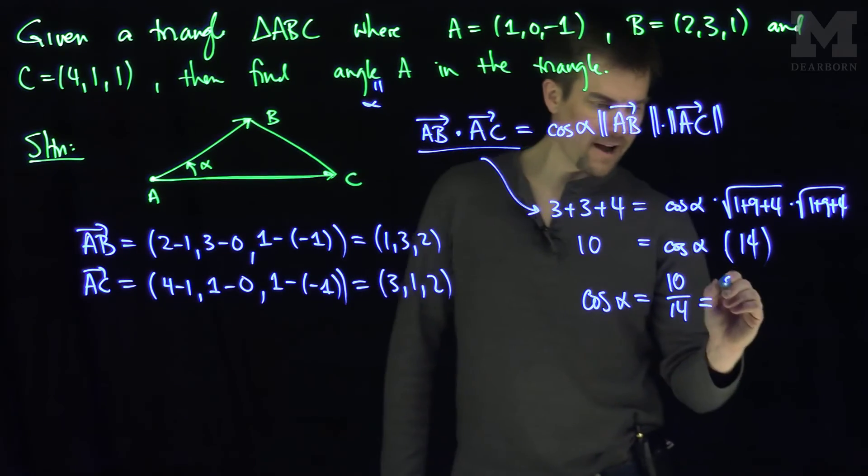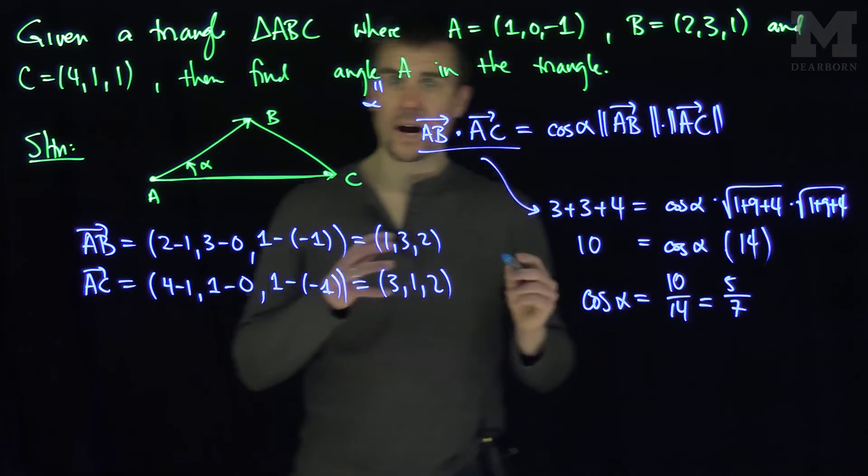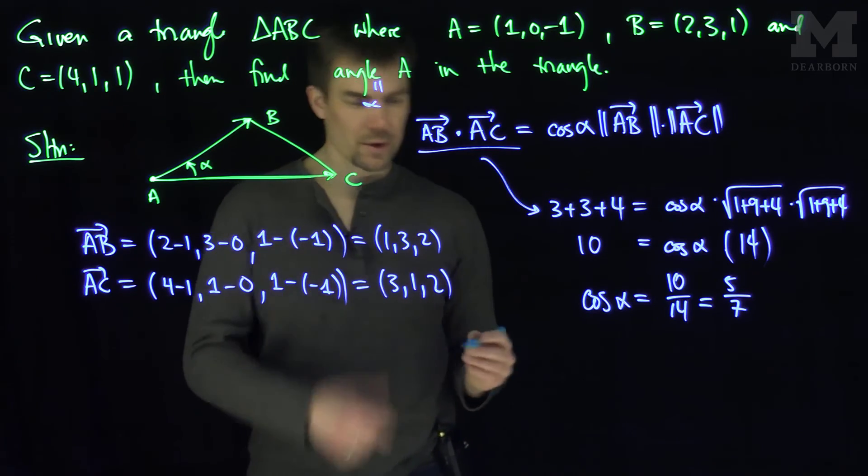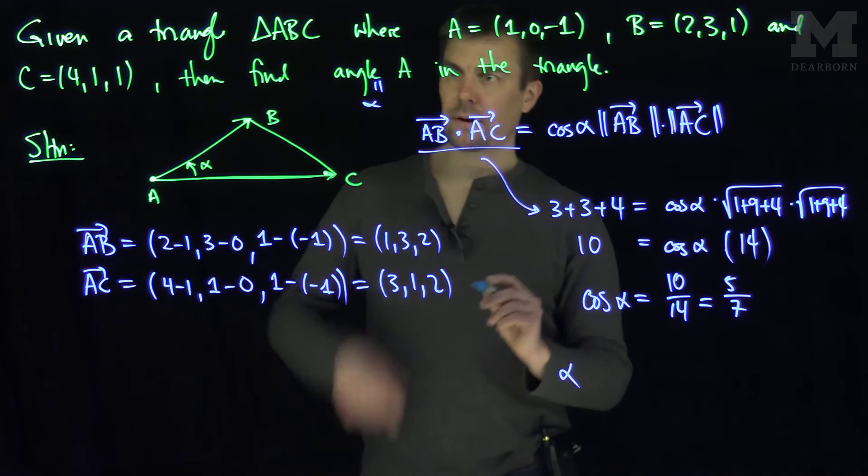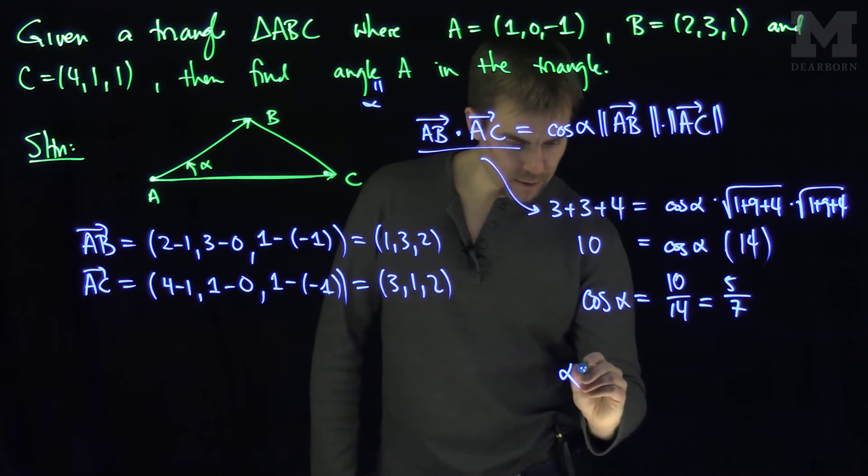Of course, we can cancel out 2 and get 5 over 7. And so therefore, I can find what this angle is by doing the inverse cosine. So the angle alpha, the angle A, or angle alpha in our triangle over here,